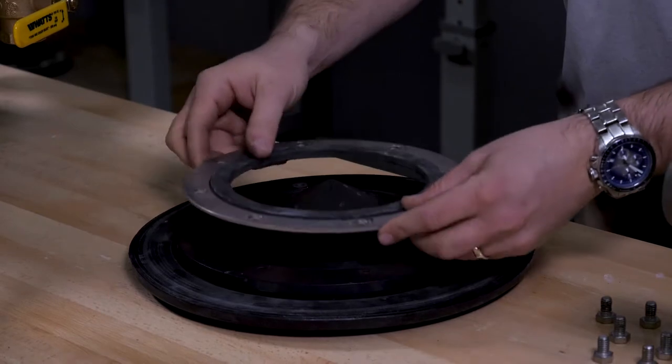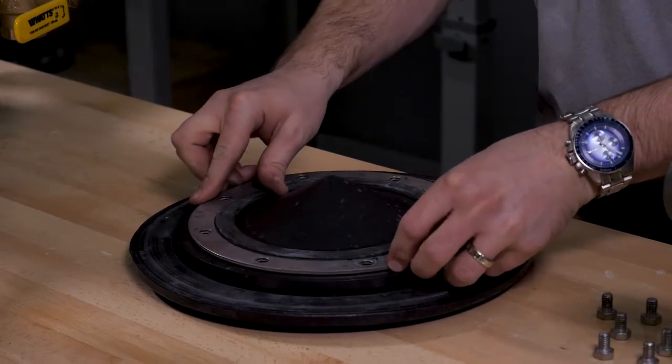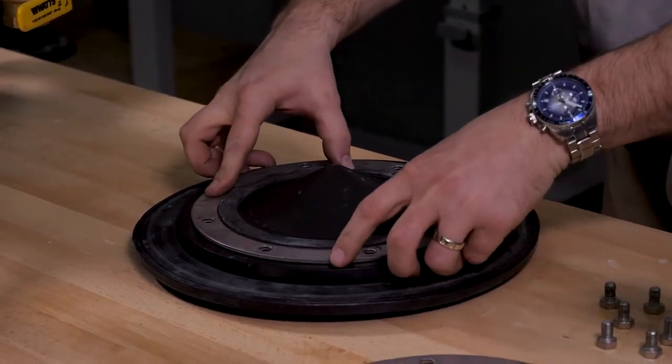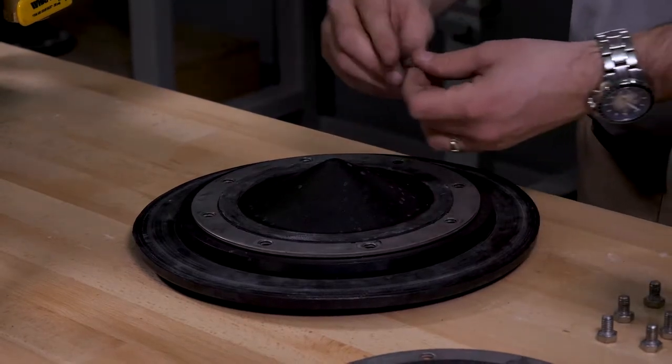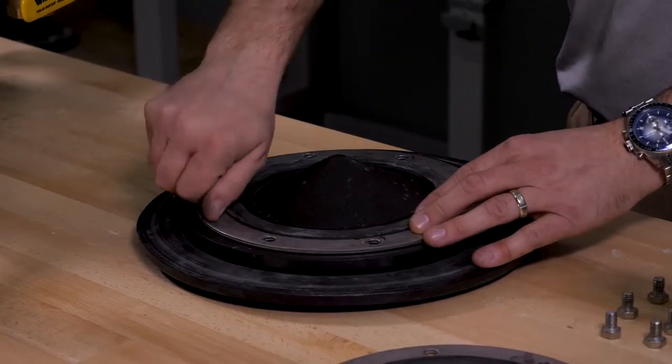Install the new rubber seat assembly, placing the side with the raised middle facing the bottom of the clapper, lining up the holes of the rubber seat assembly with the holes in the clapper.